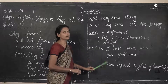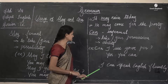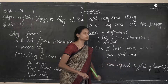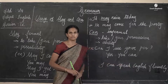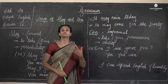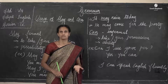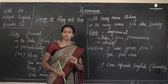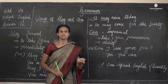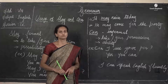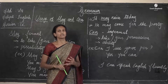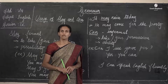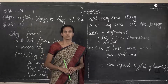Now let's see 'can' used for ability. 'I can speak English fluently' — this is your ability. When you speak about your ability, you use 'can'. For example: 'I can swim', 'I can read' — these are all abilities.